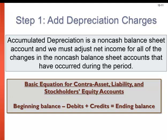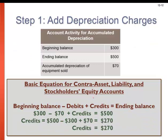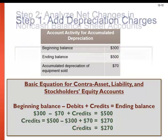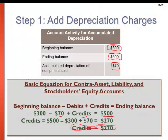Accumulated depreciation is a non-cash balance sheet account that shows accumulated depreciation over time. We need to solve for the new depreciation this year by solving for the increases to that account, or the credits. A little algebra is required here. If we start with a beginning balance of $300 and an ending balance of $500, and we know we sold a piece of equipment that had depreciation of $70, we can solve for the credits. Beginning balance plus the debits of $70, solving for credits, with an ending balance of $500 gives us credits of $270. So we are going to add that $270 back into our net income.